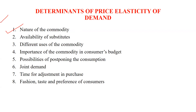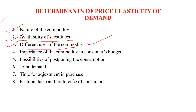The second determinant is availability of substitutes. It depends on the availability of substitutes. If a substitute is available, a person will obviously shift from that particular commodity to the substitute. If substitutes are not available and there is a monopoly, the person would purchase your product only.